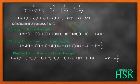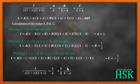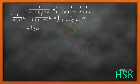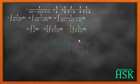Therefore the partial fraction is: 1 upon x plus 1 by 2 times 1 upon 1 minus x, minus 1 by 2 times 1 upon 1 plus x. To integrate, we replace the original fraction with its partial fraction, so the integration of 1 upon x minus x cube dx equals integration of 1 upon x dx, plus 1 by 2 times integration of 1 upon 1 minus x dx, minus 1 by 2 times integration of 1 upon 1 plus x dx.